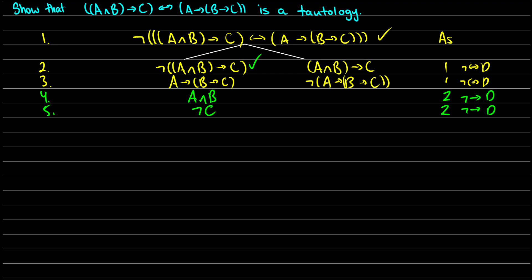I can do this on the right side too — that comes from line 3, same step. So we're going to get a is true and 'not-(b arrow c)' is true. On the right side, this is nice because we have another case of not-arrow. So we're going to get that b is true and not-c is true there. That comes from line 5, not-arrow decomposition.